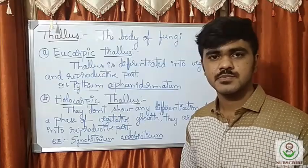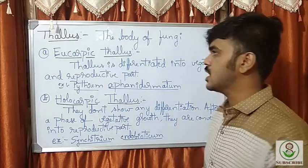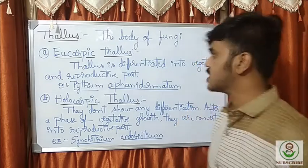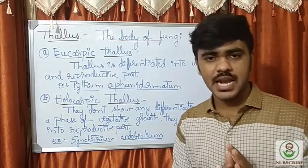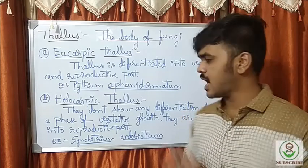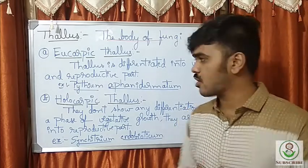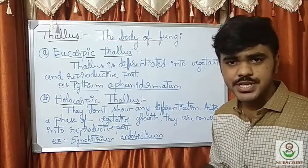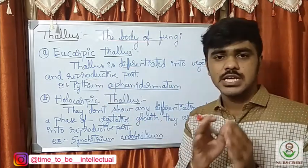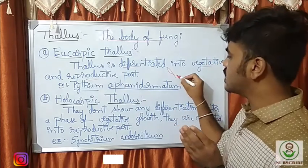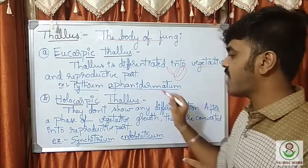Now we shall see the important parts of the fungi colony — that is the thallus. It is very important in fungi. The body of the fungi is called the thallus. Among thallus there are two types: eucarpic thallus and holocarpic thallus. In the eucarpic thallus, the fungi body is differentiated into vegetative and reproductive parts. The best example is Pythium aphanidermatum.